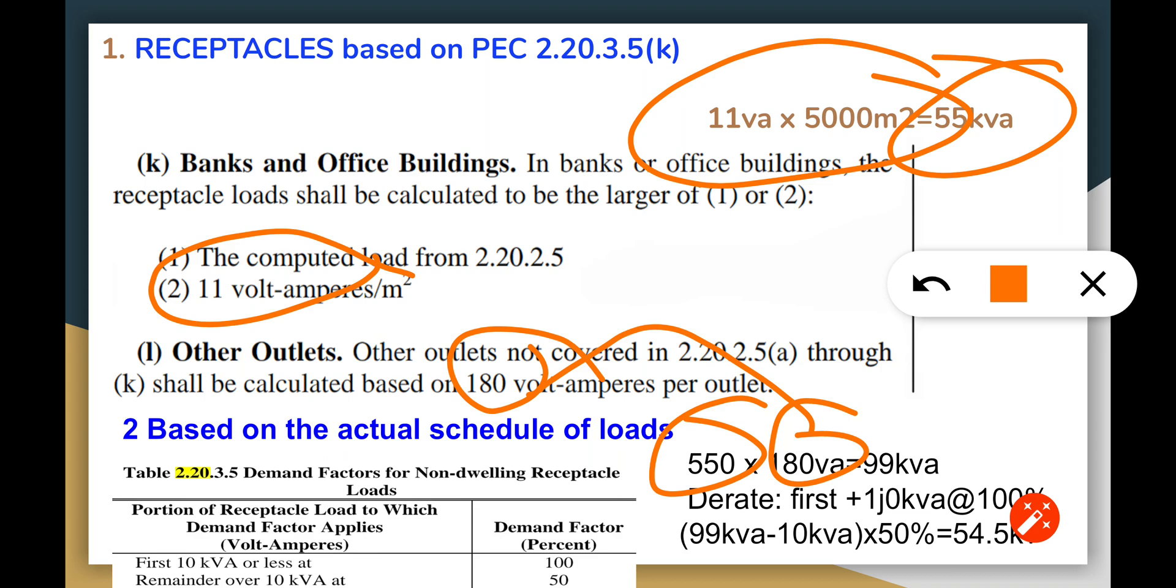According to the rules, if we have more than 10 kVA we have to derate based on this table. So we have the first 10 kVA at 100 percent, and 99 minus 10 kVA cut it to 50 percent, and we shall have 54.5 kVA. But we have the largest at 55 kVA, so this is where we're going to use the 55 kVA.